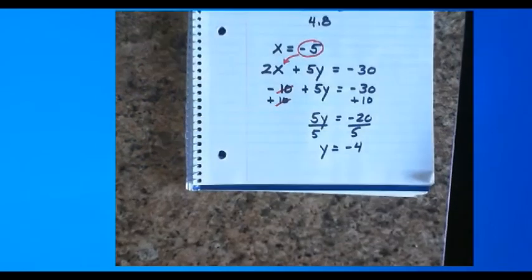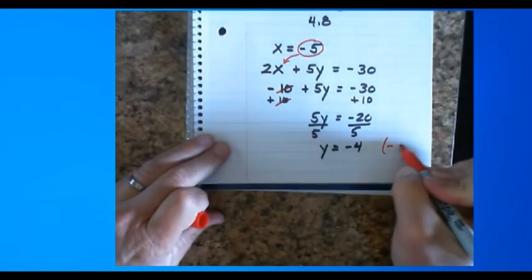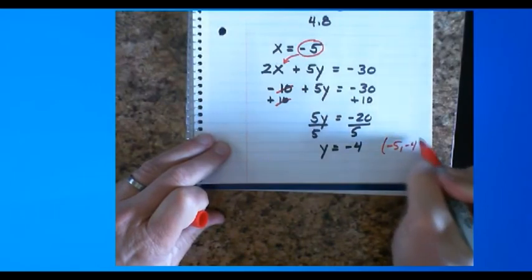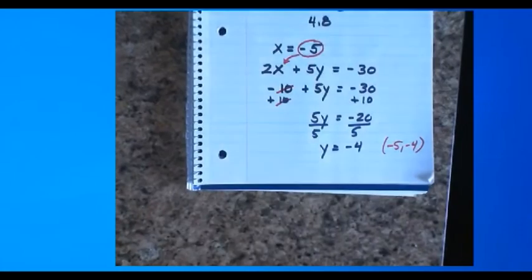And remember, what we're finding here is a point. We're finding negative 5 comma negative 4. We don't know that yet, but negative 5 comma negative 4. That's really what we're looking for when we go to tomorrow's lesson.